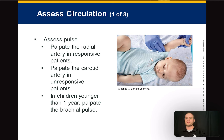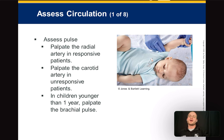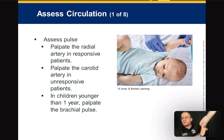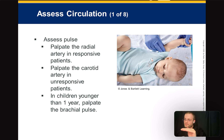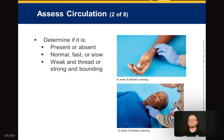Assess circulation by palpating the radial artery on the thumb side in responsive patients. In unresponsive patients, palpate the carotid artery. In children under one year, palpate the brachial pulse — separate the bicep and tricep and push straight in toward the humerus. We assess whether the pulse is present or absent, and also its quality — is it thready (weak) or bounding? A bounding pulse is a strong, forceful pulse.